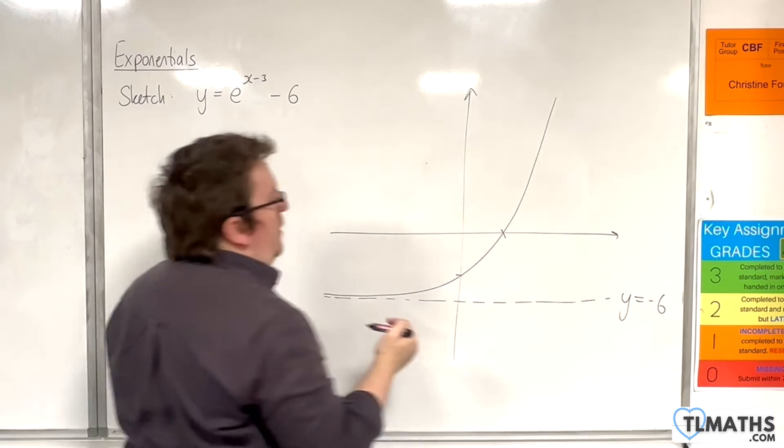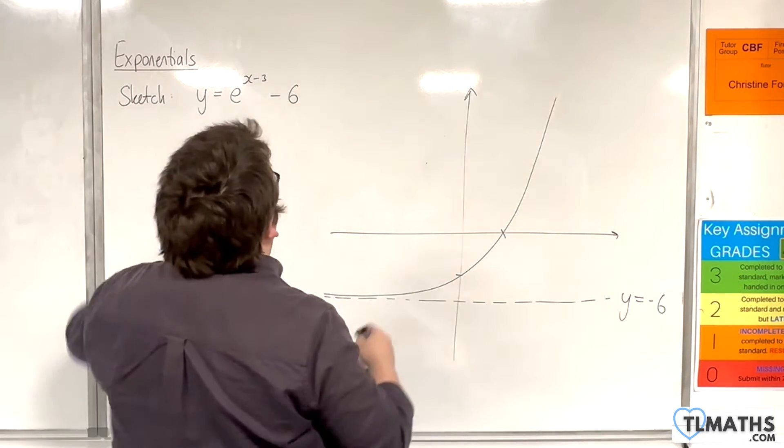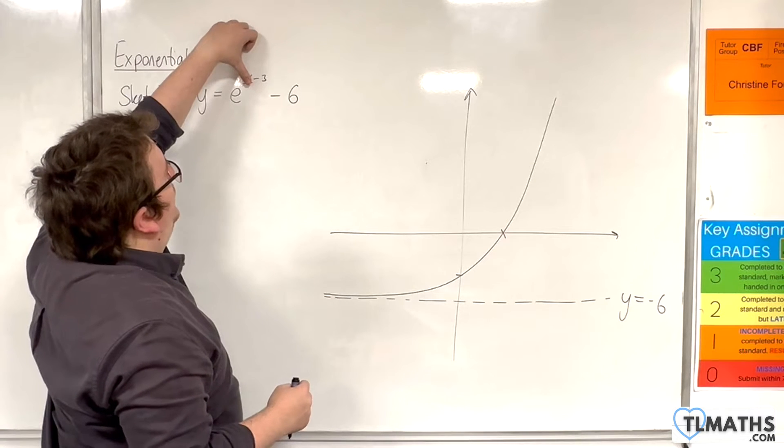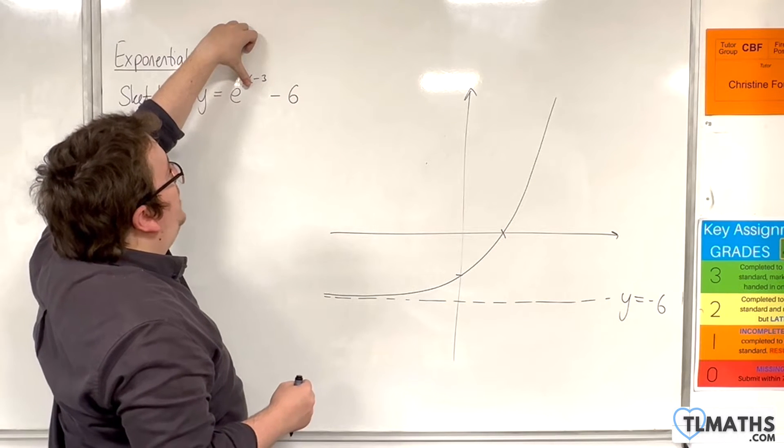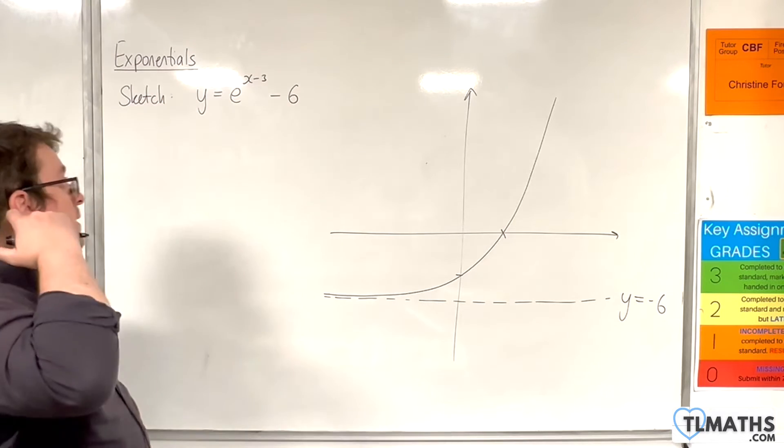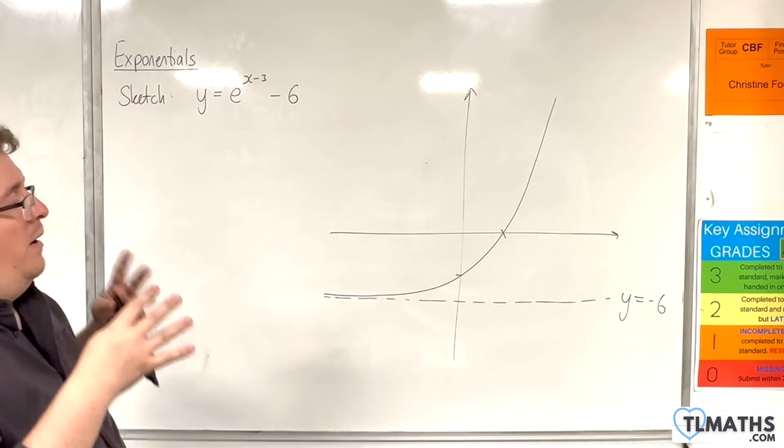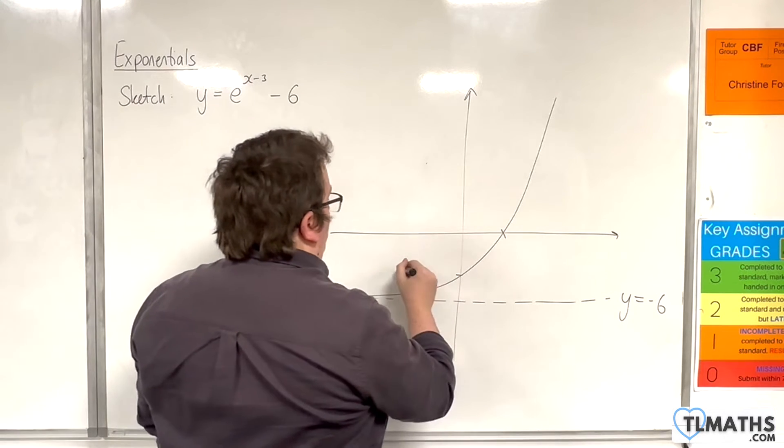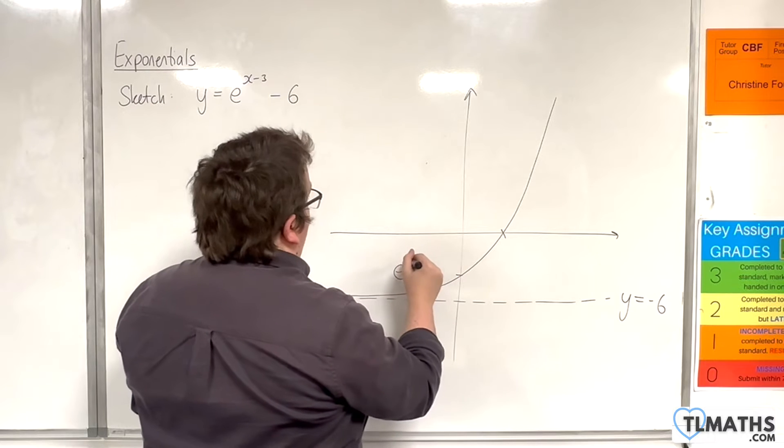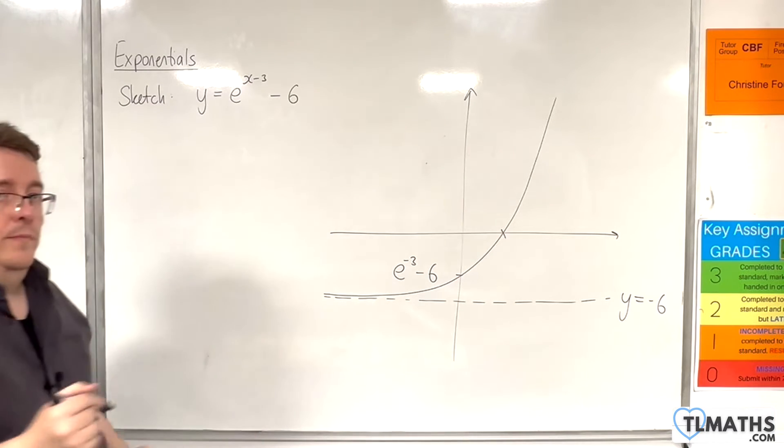So, I'm interested in where it crosses the x-axis and the y-axis. It crosses the y-axis when x is 0. So, that would be e to the 0, take away 3, take away 6. Now, you could plug that into your calculator, but I'm going to write it in exact form. So, that's e to the minus 3, take away 6.